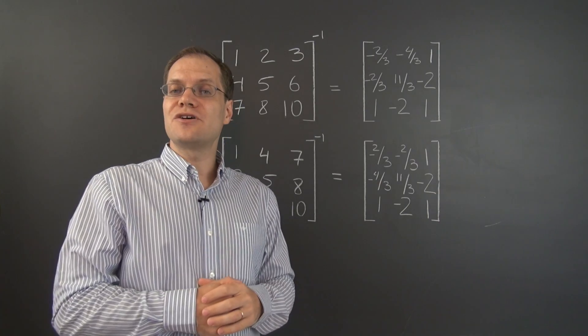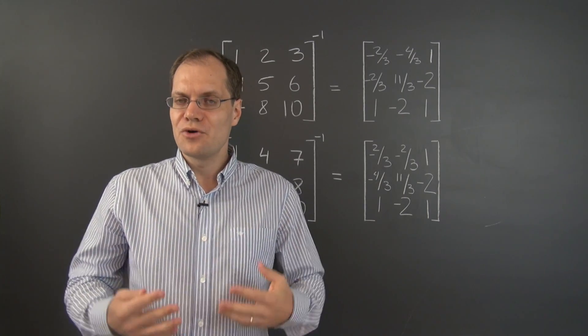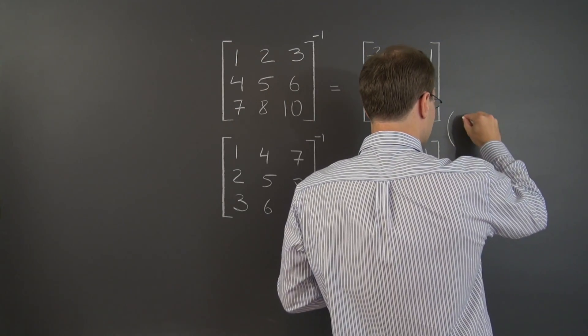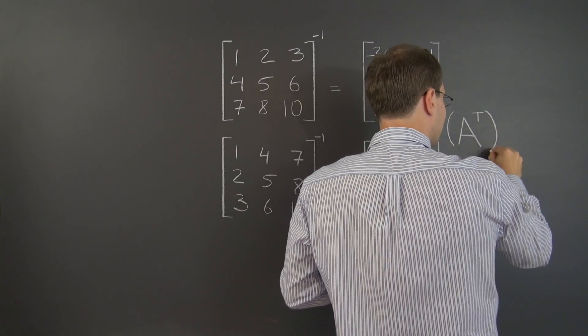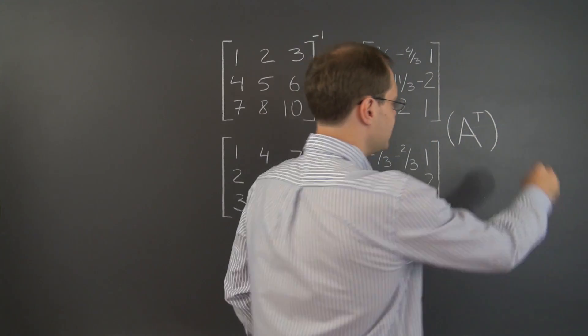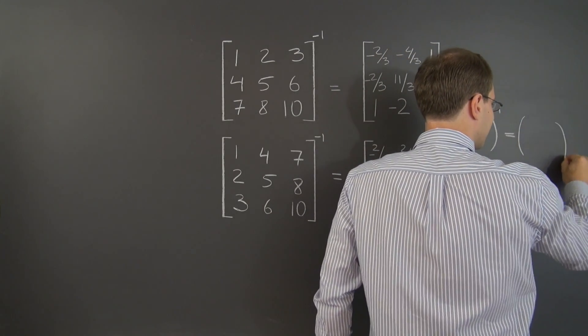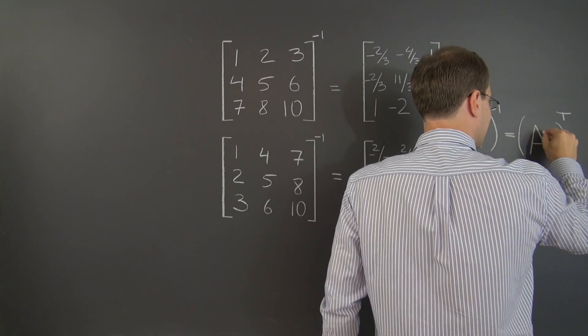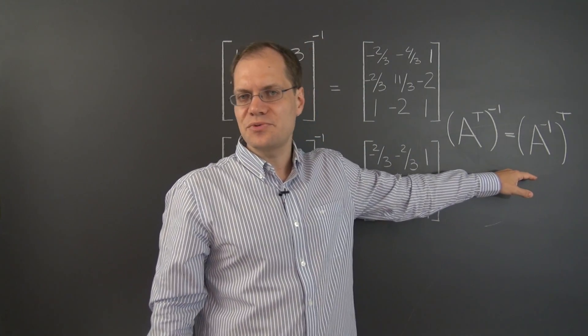So the operations of the inverse and the transpose commute, which can be written very concisely in the language of matrix algebra in the following way. That the inverse of the transpose equals the transpose of the inverse. And this is a very elegant and nice way and a very concise way of writing it down.